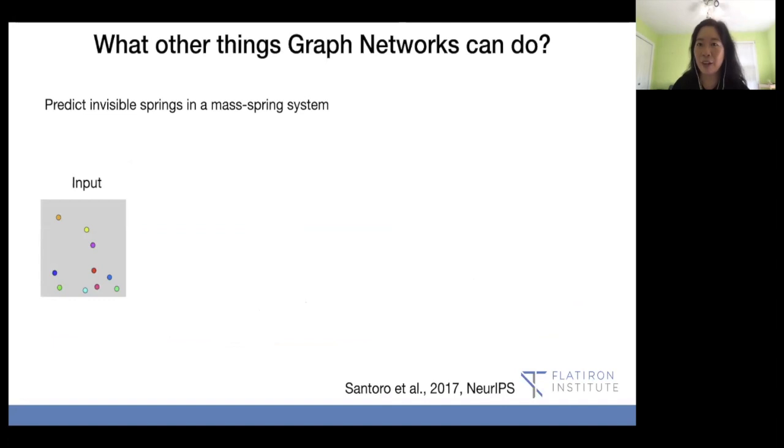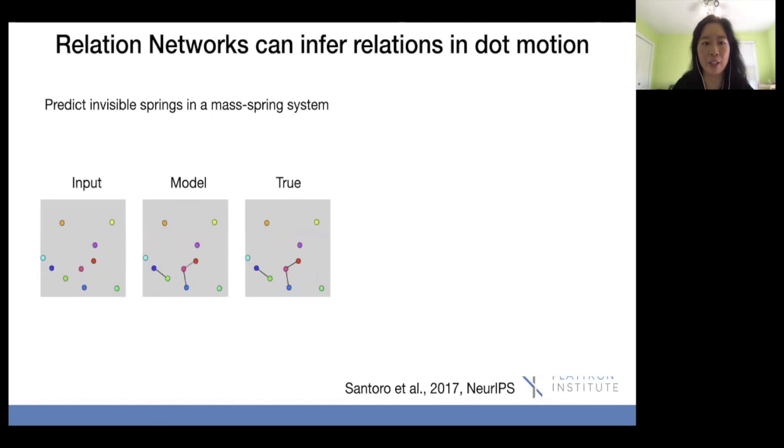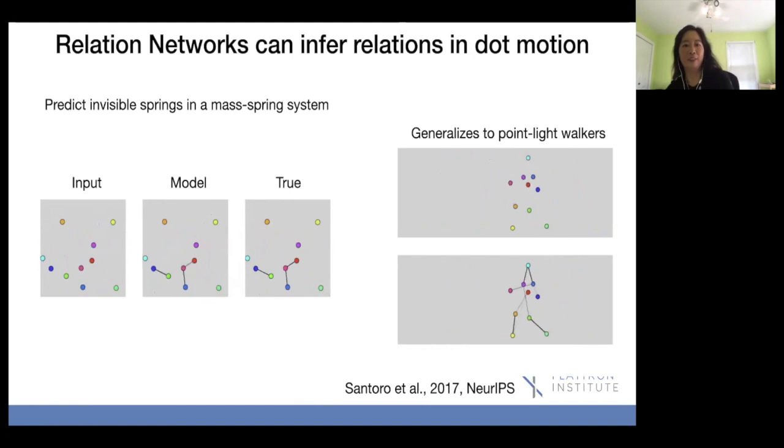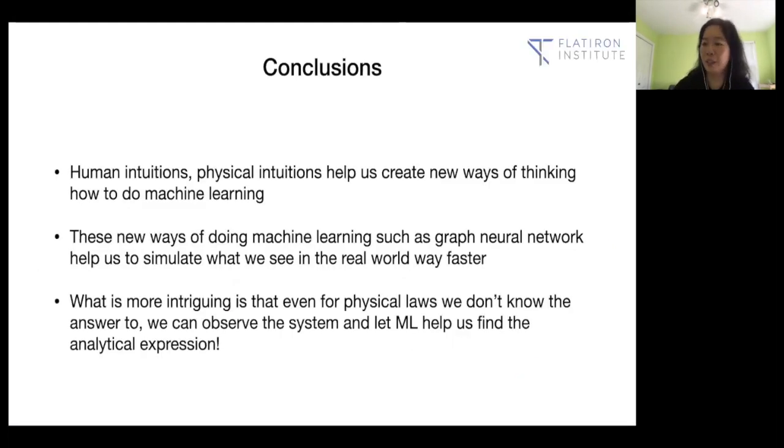So what other things graph network can do? This is something that is related to something else we're doing too. We can predict the invisible springs in a spring mass system, this is the input, that's the model and you can predict where the springs are. And Miles and I and some other colleagues in UCL we're actually looking at planetary system data and try to see whether we can find say the extra planet nine that we don't know where they are and there's an interesting discussion of whether we can locate these missing components that we know is there and it's affecting our system very slightly so can we locate them. Same thing for this point like walkers, it's kind of cool that you can figure out where the invisible springs are, so that's another example.